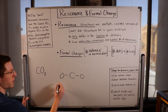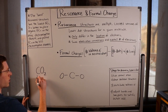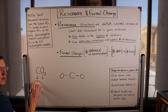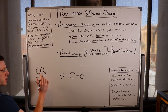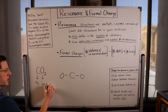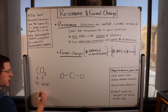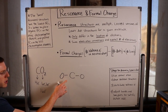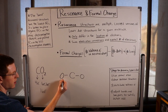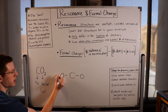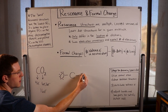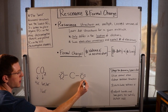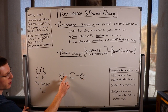Now I need to distribute my valence electrons. How many do I have to work with? Carbon is in group 4A, so it contributes four valence electrons. The oxygens each contribute six valence electrons since they're in group 6A. So in total I have 16 valence electrons to work with. I'll start distributing those around my molecule and satisfy the octet rule for the outer oxygen atoms — they each need six more electrons.